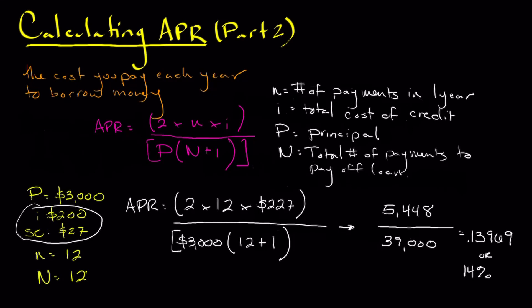Because remember, APR is commonly expressed in a percentage form. So let's look at kind of what the meaning of this is. So what we were trying to figure out is on a one-year loan with monthly payments, borrowing $3,000 and paying $200 over the one-year period with a $27 service charge, our APR, our annual percentage rate, effectively is 14% over that period.